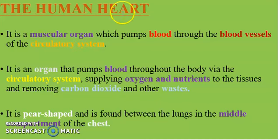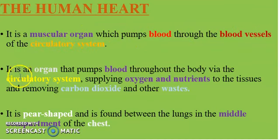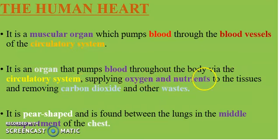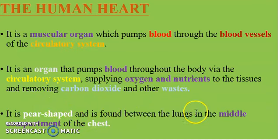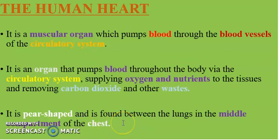Let's talk about the human heart. The human heart is a muscular organ which pumps blood through the blood vessels of the circulatory system, supplying oxygen and nutrients to tissues and removing carbon dioxide and other waste products. The human heart is pear-shaped and is formed between the lungs in the middle compartment of the chest. So the human heart basically pumps blood to all parts of the body.